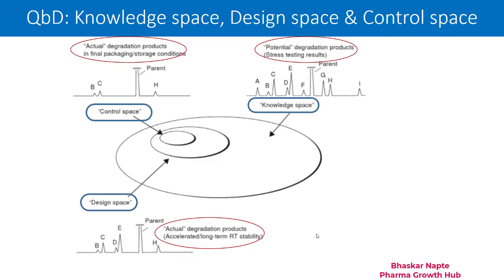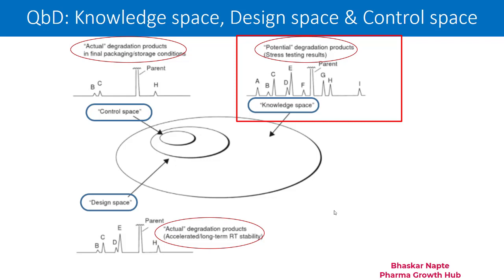Let us talk about the first term, that is the knowledge space. You can see in the diagram that the knowledge space is biggest amongst the design space and the control space. The knowledge space can be designed by understanding the potential degradation products. How can one understand the potential degradation products? By conducting the stress testing. What kind of stress testing are generally recommended?